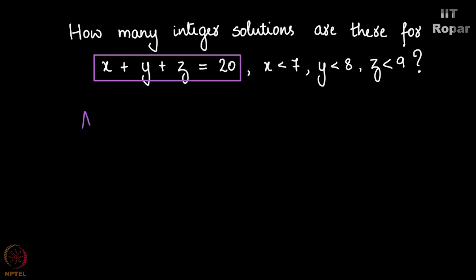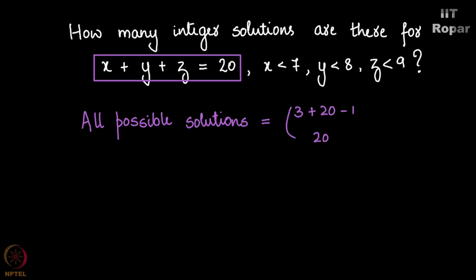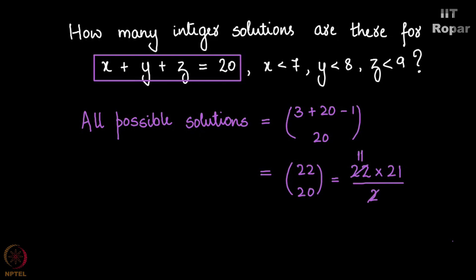All possible solutions for this is given by 3 plus 20 minus 1 choose 20, following the formula n plus r minus 1 choose r, which is 22 choose 20, which is 22 into 21 by 2. Cancelling 2 and 22 we get it as 231.